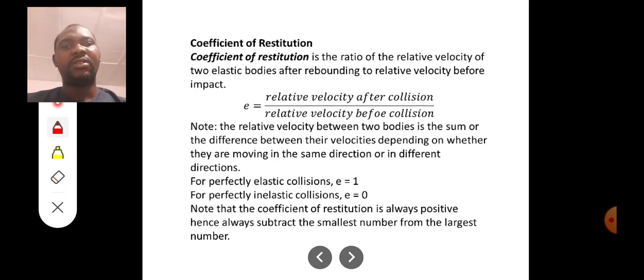Okay, so let's continue here. You can see that for perfectly elastic collision, if the collision is perfectly elastic, your E is equal to 1, the coefficient of restitution is 1. But for perfectly inelastic collision, your E is 0.